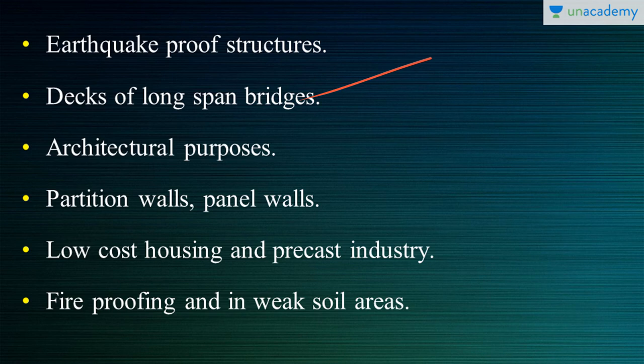Next is architectural purposes — it can be formed into whatever shape is desired. Another application is partition walls and panel walls, which don't bear any load and are used purely for partitioning, acting as filler walls. It is also used in low-cost housing and the precast industry — in low-cost housing, a high-grade concrete is not needed, and this concrete is cheaper while providing the same stability. In the precast industry, lightweight concrete gives designers a wide range of design options.